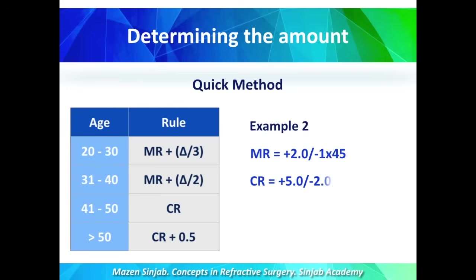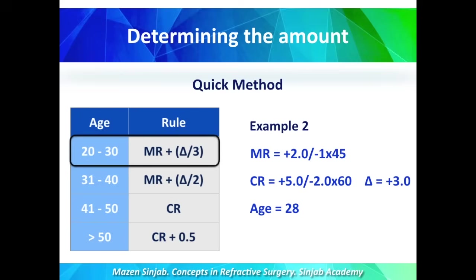Example number two: a patient has manifest refraction of plus 2, minus 1 at 45, and cycloplegic refraction of plus 5, minus 2 at 60. Delta is plus 3. The patient's age is 28 years. So we are going to correct plus 3, minus 1 at 45 — using minus 1 at 45, which is the manifest astigmatism.